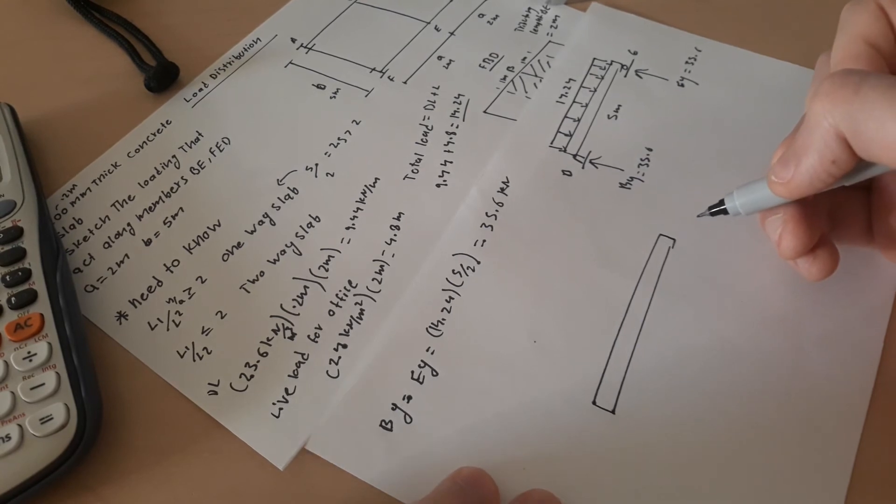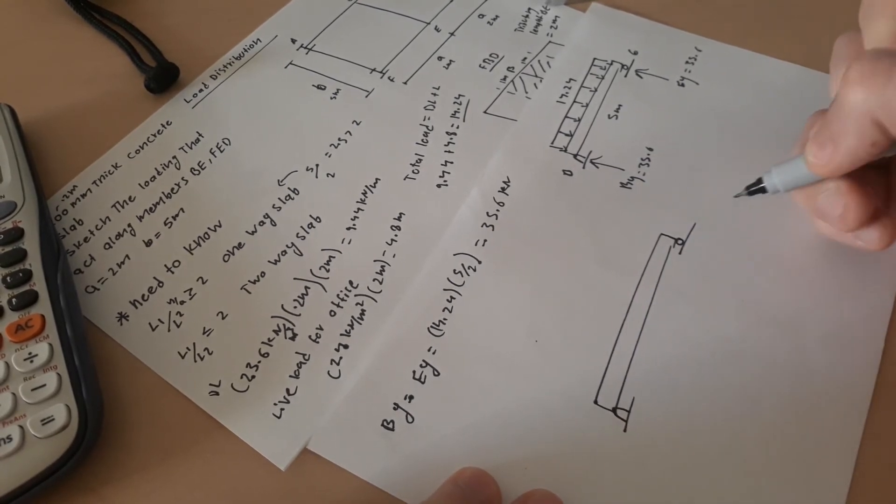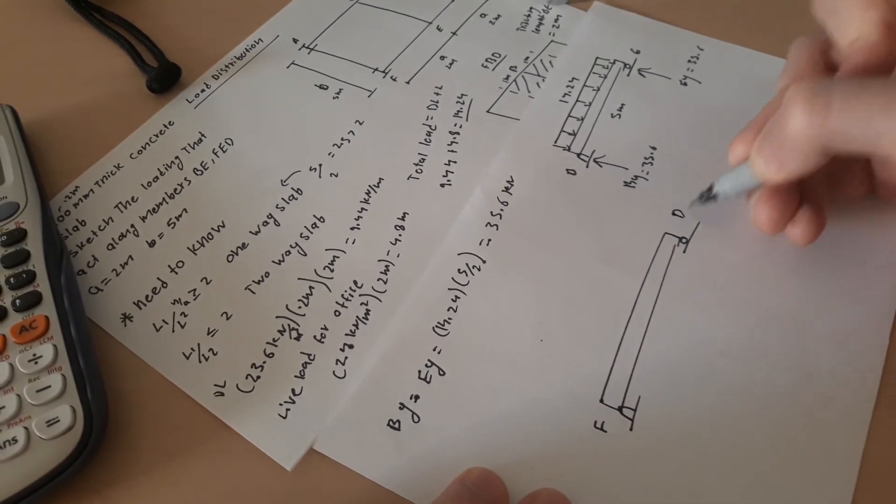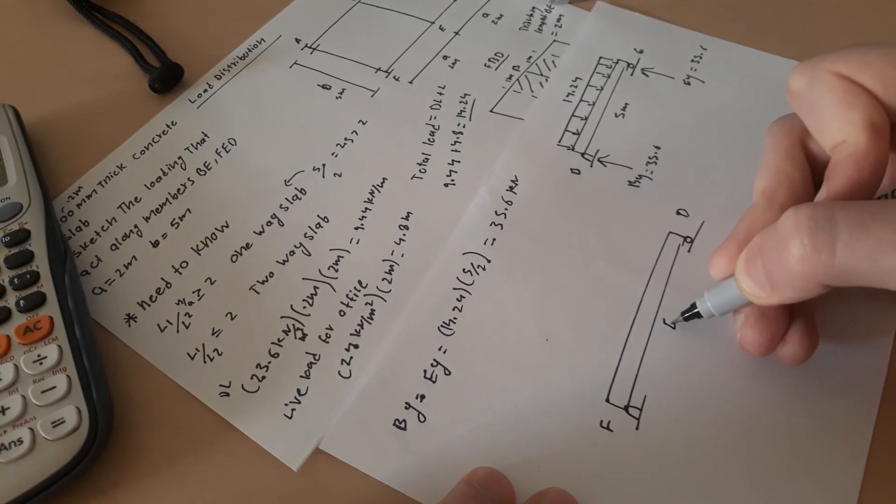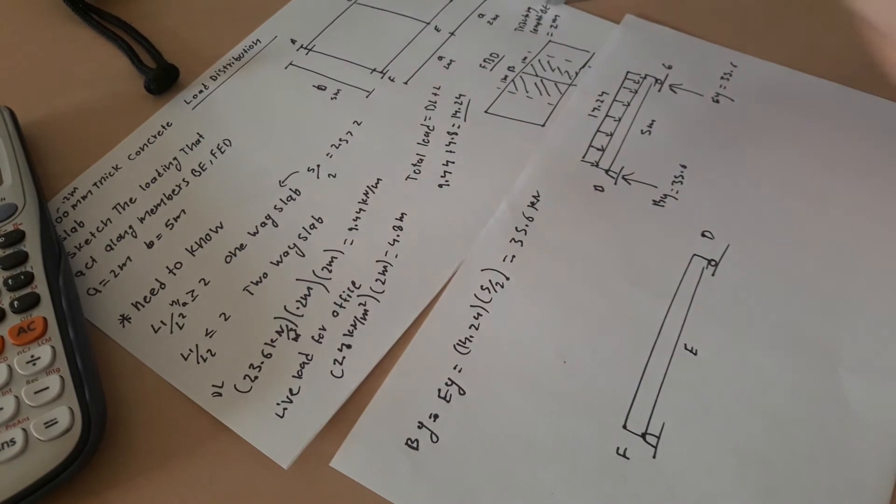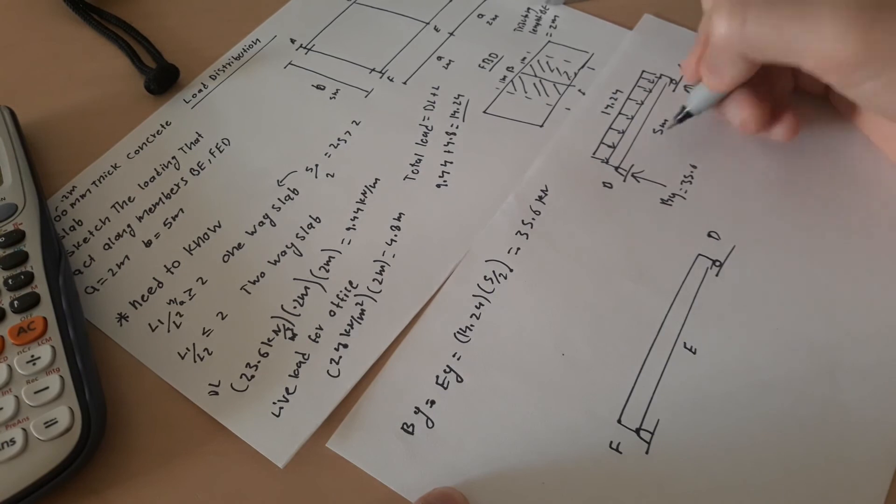For FED, again we draw a pin and draw a roller. F and D. Right here we have FED. So we see that right here for FED we only have one load which is on E, and that's same as one of these, By or Ey doesn't matter since it's symmetrical loading. So 35.6 kilonewton.